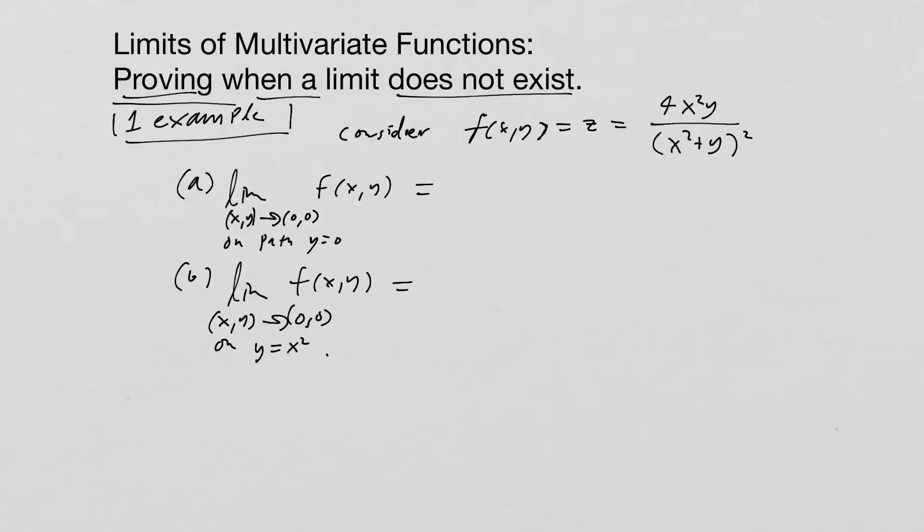This one will involve taking x and setting y equal to zero and taking it towards zero zero. And it'll be four times x squared times zero all over (x squared plus zero) quantity squared. That's simply zero over x to the fourth. So the limit there is going to be zero.